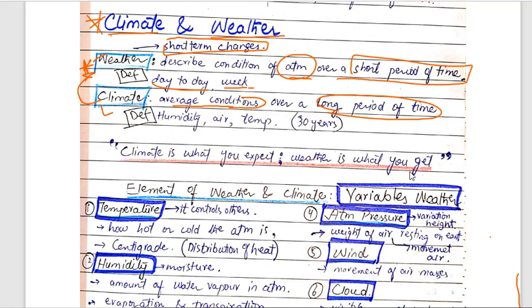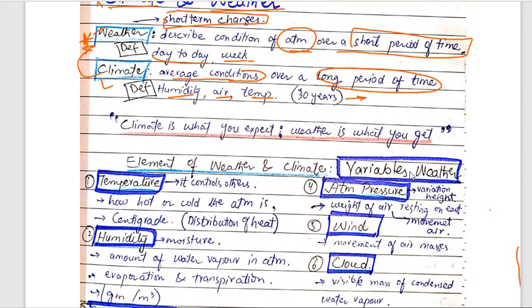Climate comes from factors like humidity, air, temperature, etc. It can be measured over approximately 30 years. In one line you have to understand: climate is what you expect, weather is what you get. These are very exact and relevant quotations.